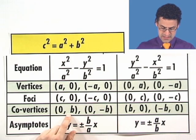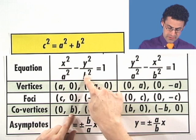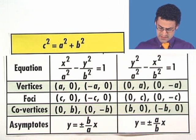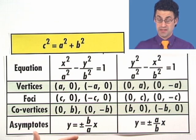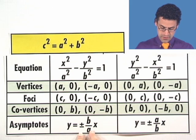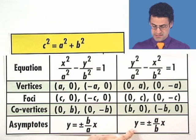And then the co-vertices are precisely the values that are associated with b. And then the asymptotes, which are these new objects, we didn't have asymptotes for the ellipse, but now we do, are given by plus or minus b over a, x in this case, or y equals plus or minus a over b, x in this case.